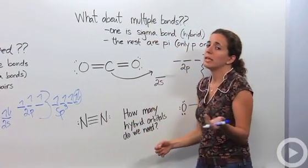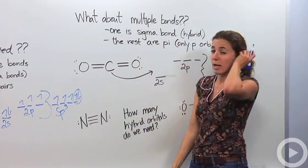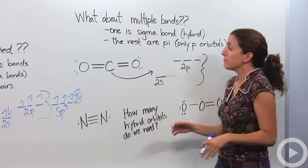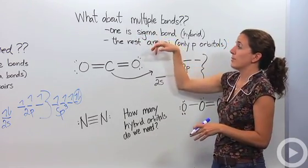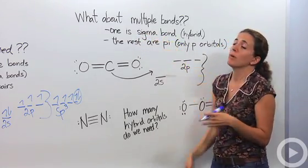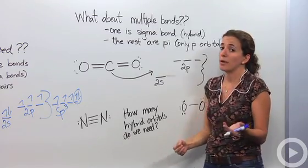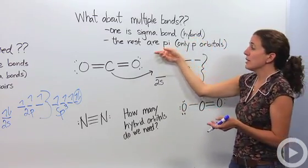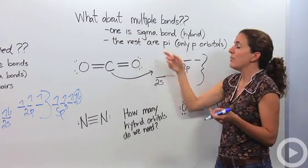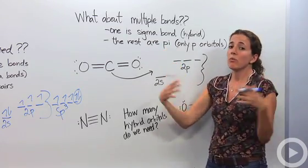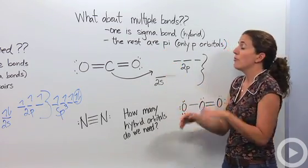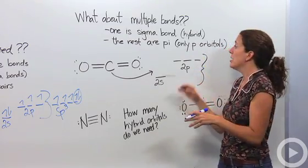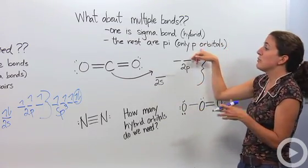What about when we have multiple bonds — double bonds and triple bonds? One of those bonds within a multiple bond is called a sigma bond, and sigma bonds are hybridized. The rest of those bonds are called pi bonds. Pi bonds are just p orbitals overlapping each other — only p orbitals. They are a little bit higher in energy and actually different in energy, so we keep them separated. So in a double bond we have one sigma and one pi.